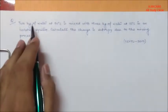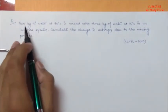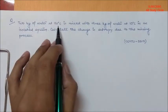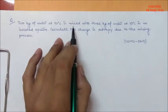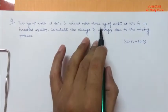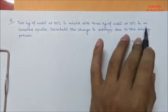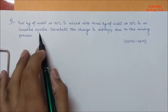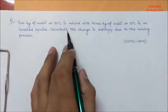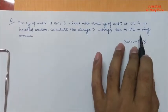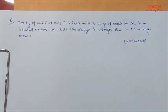The question is like this: 2 kg of water at 90 degree Celsius is mixed with 3 kg of water at 10 degree Celsius in an isolated system. So, we can calculate the change in entropy due to the mixing process.